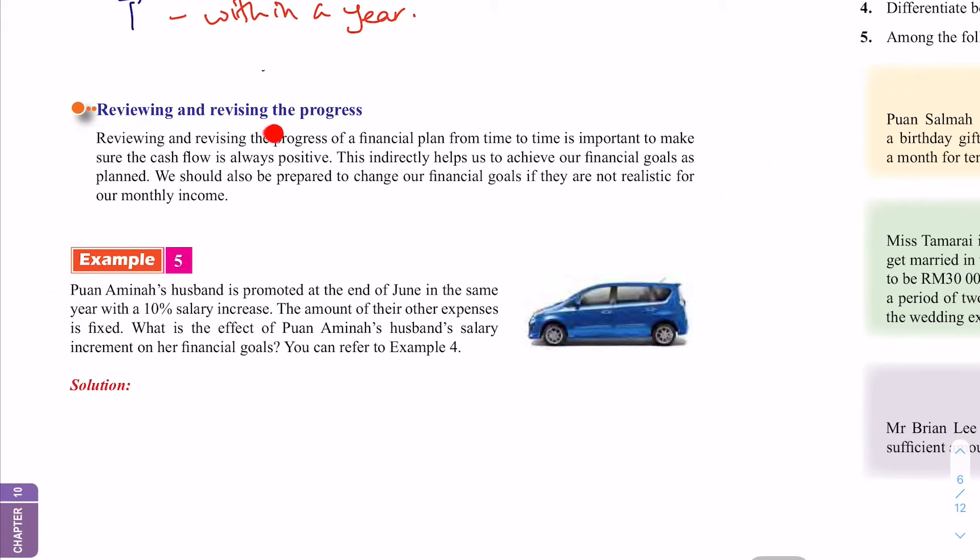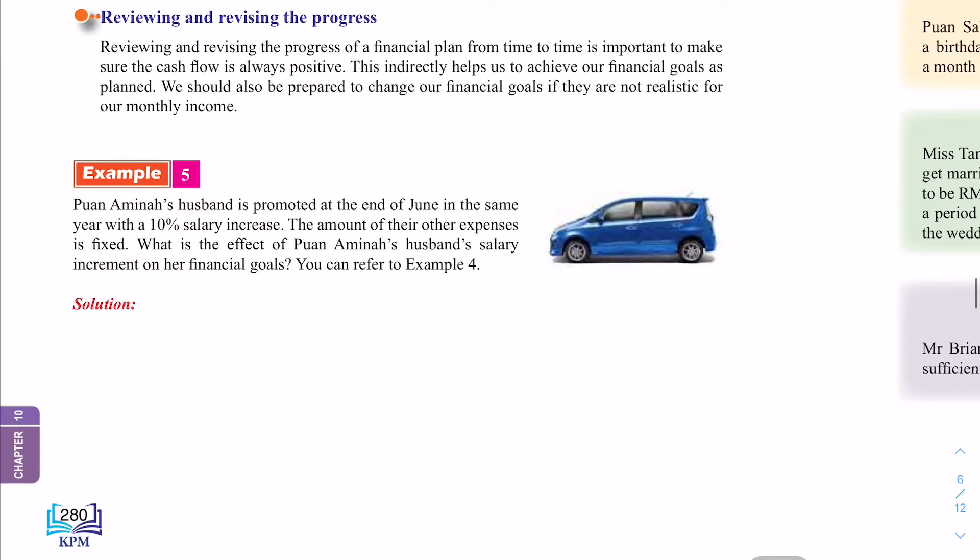Reviewing and revising the progress. Reviewing and revising the progress of a financial plan from time to time, it's important to make sure the cash flow is always positive. Kita kena review and revise setiap masa. Kalau nampak macam ada overspend sikit lah, kita ubah. Overspend sikit, kita ubah. This indirectly helps us to achieve our financial goal as planned. We should also be prepared to change our financial goal if they are not realistic for our monthly income. So, sekarang cuba tengok example 5.